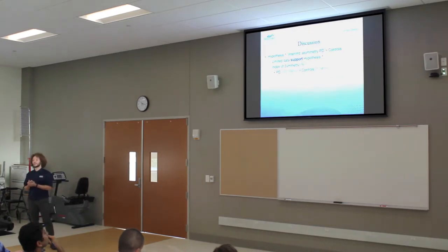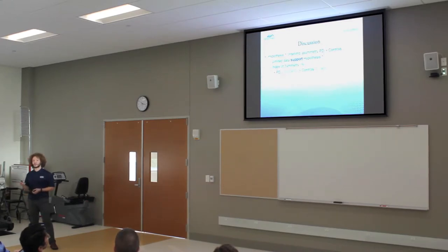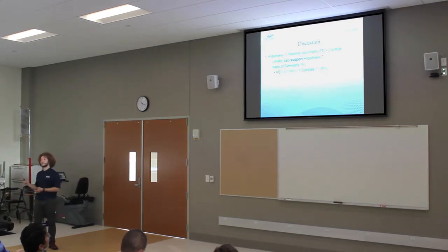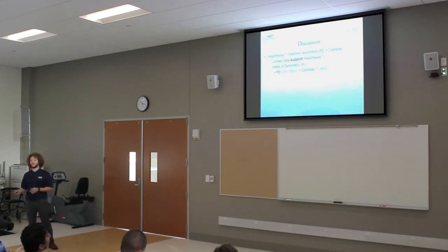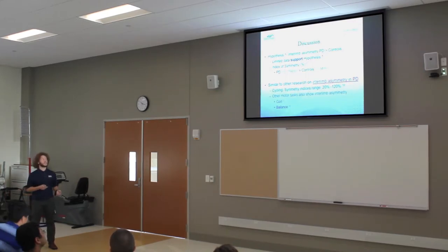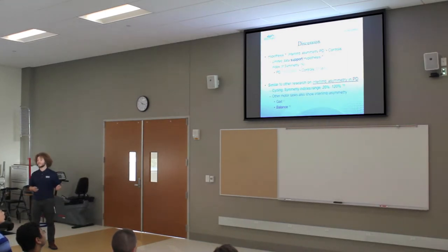Our data supported our first hypothesis: interlimb asymmetry was greater in individuals with Parkinson's than in controls. The raw asymmetry index for individuals with Parkinson's ranged from roughly 35% to 154%, while for controls it was only 1% to 34%. This is similar to the Panko et al. study, whose ranges were 20% to 120%.